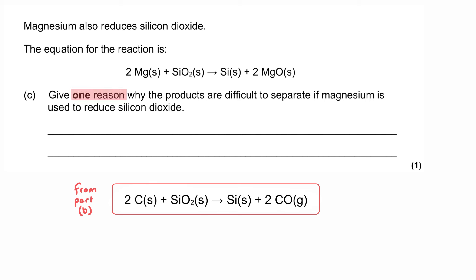And we've been asked to give one reason why the products are difficult to separate if magnesium is used to reduce the silicon dioxide. And that's implying that this difficulty wasn't present when we were using carbon to extract the silicon. And when we look at the products, we see that we produce silicon in the solid state, just like in the carbon equation. And we produce magnesium oxide in the solid state.